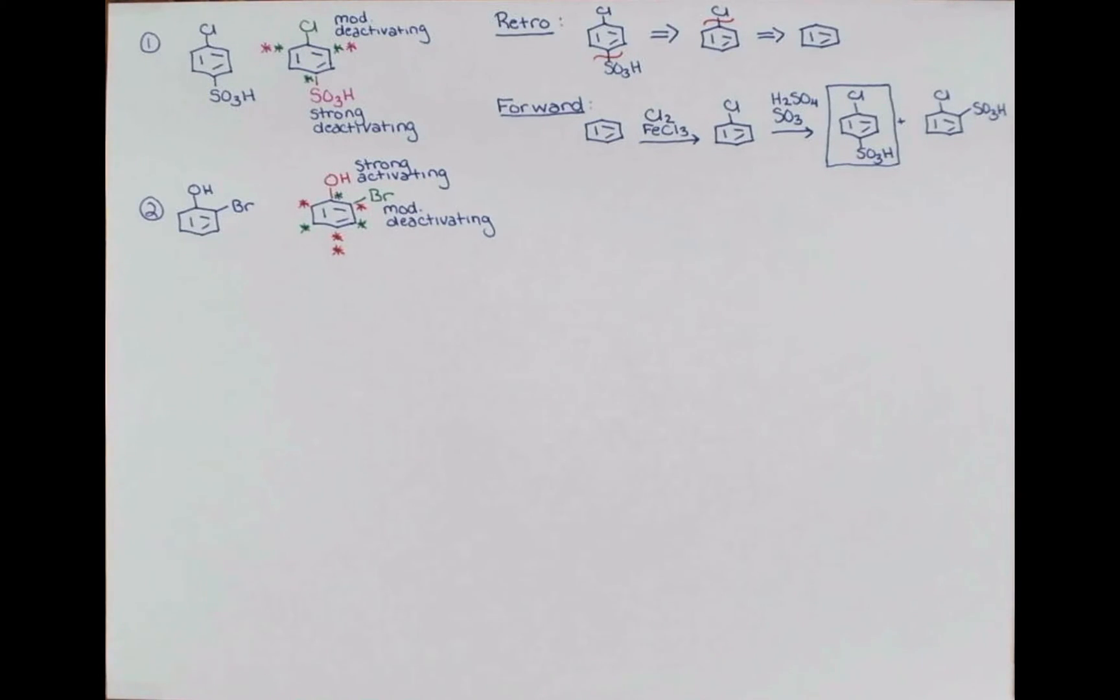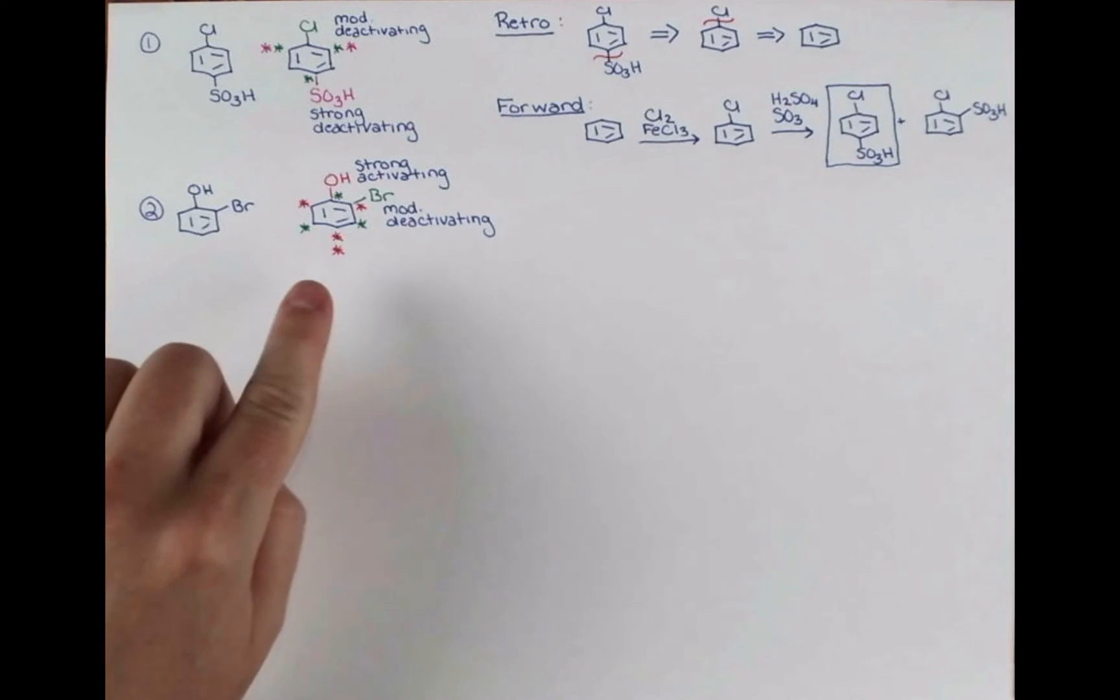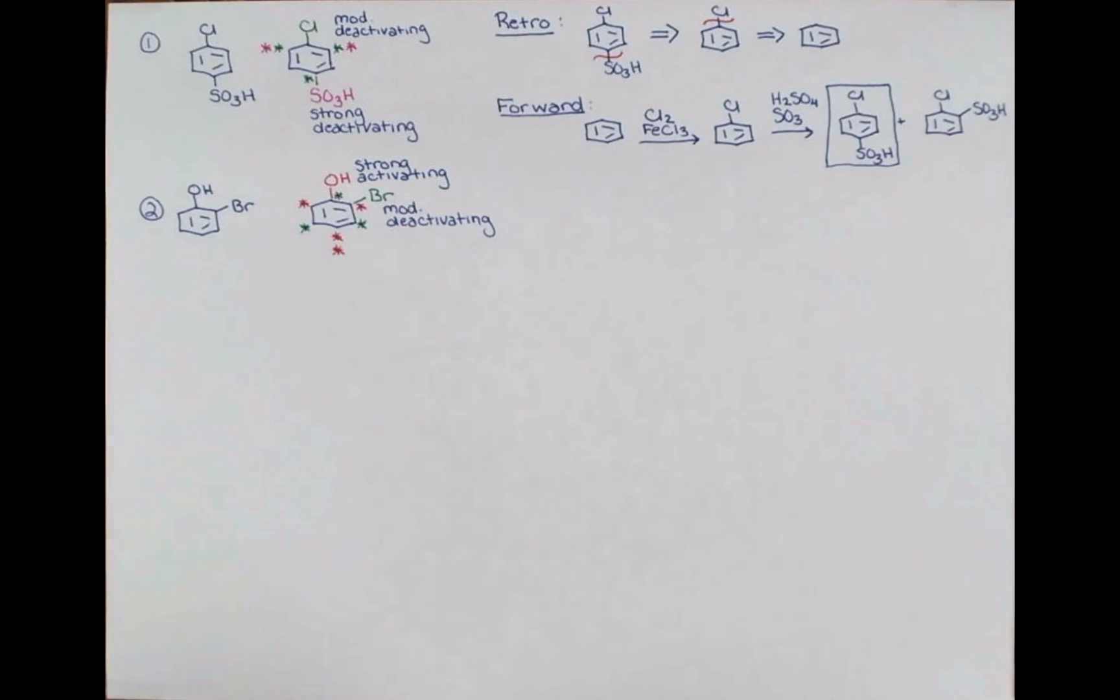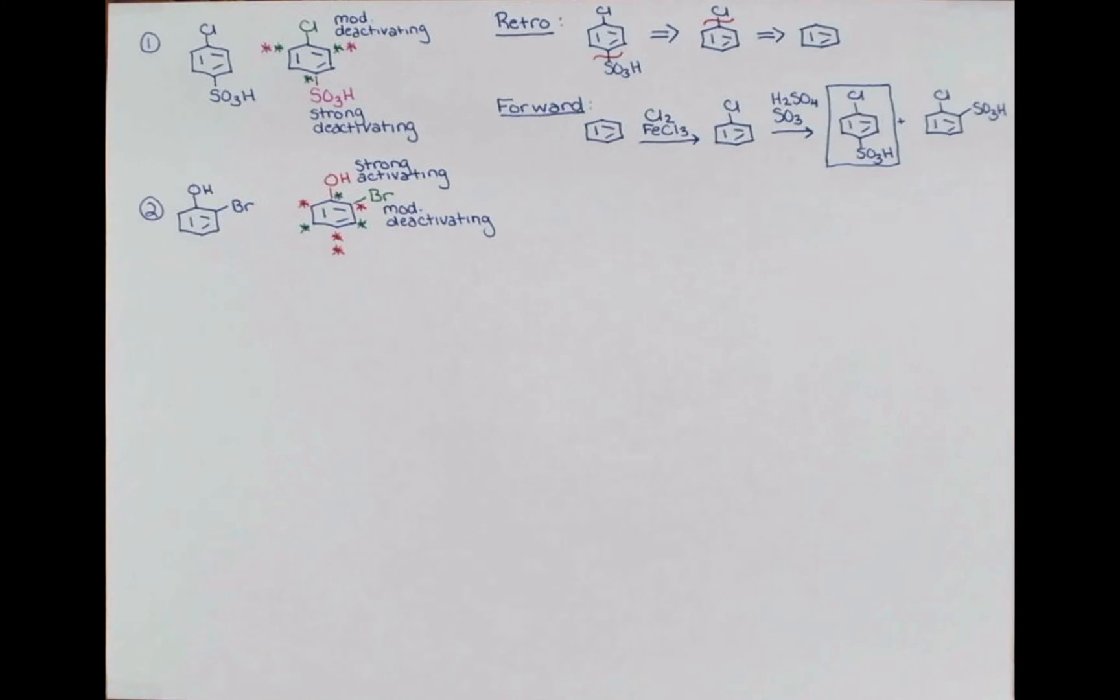Since this is our strong activator, we definitely want to introduce it first because it makes the ring able to attack things better. However, we will get a regioselectivity problem because the bromine will want to go here. See if you can think of a way to use our blocking group and remove it, starting with maybe phenol. Go ahead and pause me and try that.